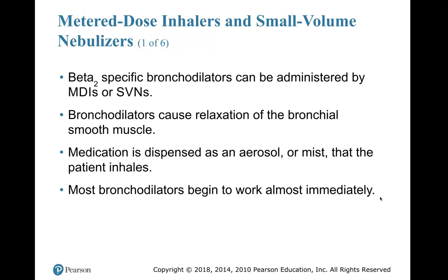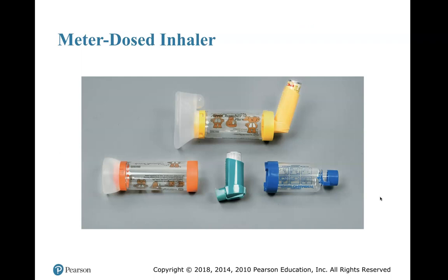Metered-dose inhalers and small-volume nebulizers. Beta-2 specific bronchodilators can be administered by MDIs or SVNs — MDI is a metered-dose inhaler, SVN is a small-volume nebulizer. A beta-2 bronchodilator is going to be levalbuterol or albuterol. Bronchodilators cause relaxation of the bronchial smooth muscle. Medication is dispensed as an aerosol or mist that the patient inhales, and most bronchodilators begin to work almost immediately. The green inhaler in the middle is usually what you'll see, but children may have spacers. After shaking the inhaler vigorously for about 30 seconds, you puff the inhaler into the spacer and instruct the child to breathe it in.